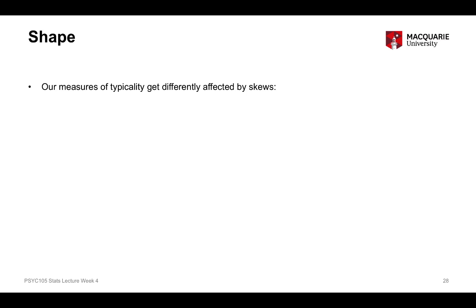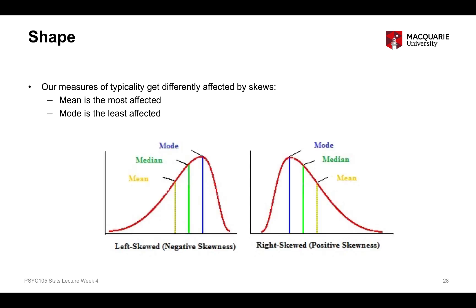The measures of typicality — mean, median, and mode — are affected differently by skew, just as they are by outliers. The mean is the most affected and most compromised by skews. The mode is the least affected, because it always sticks with the most common score regardless of unusual values. In a left-skewed distribution the mean gets pulled down toward the direction of the skew, and the same principle applies for a right-skewed or positively skewed distribution.